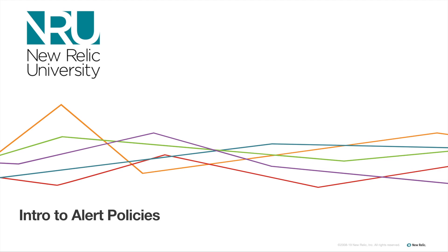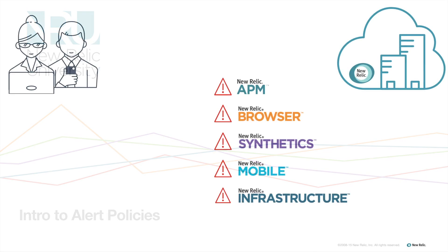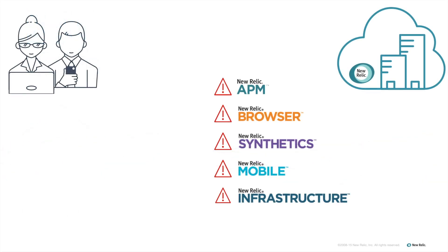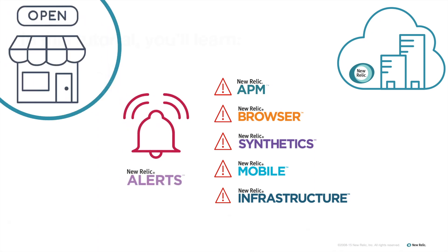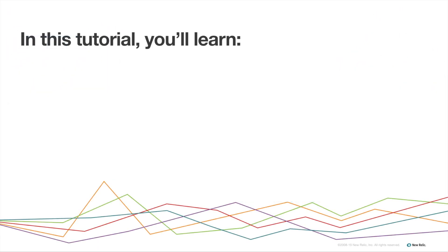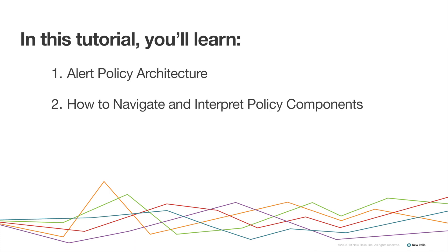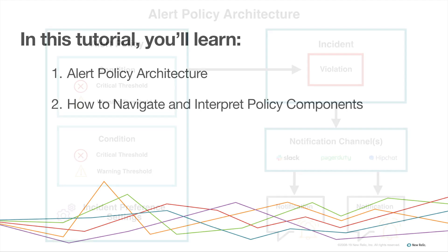You can use alert policies to ensure you're immediately notified when performance problems arise in your apps or networks, so you can address them before they affect your business. In this tutorial, you will learn how an alert policy is structured so you can navigate and interpret each component of a policy.